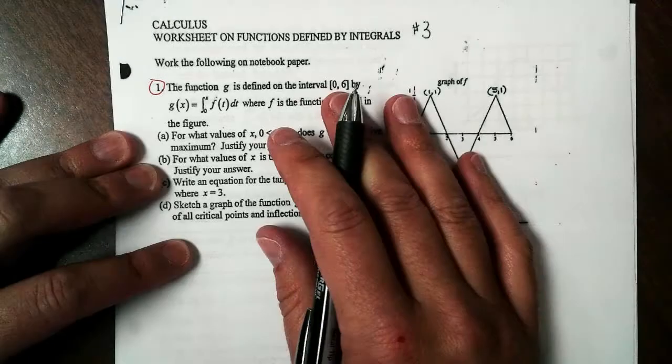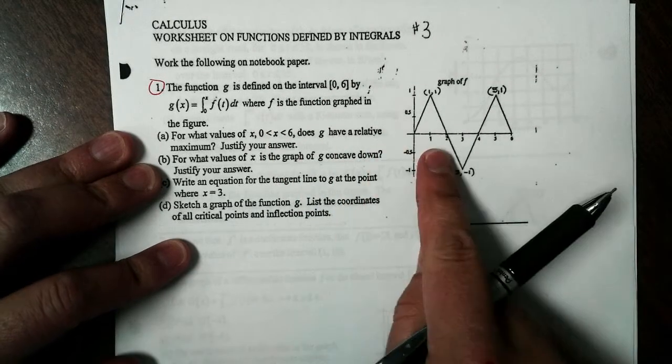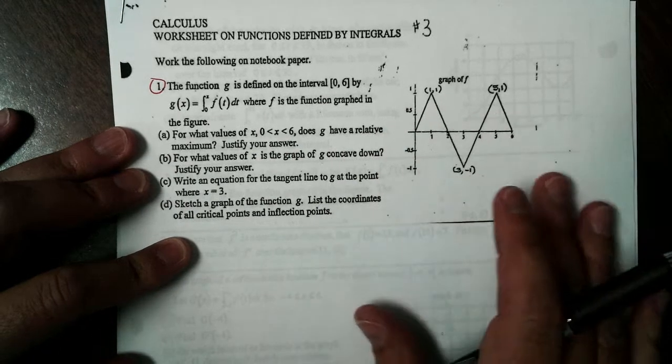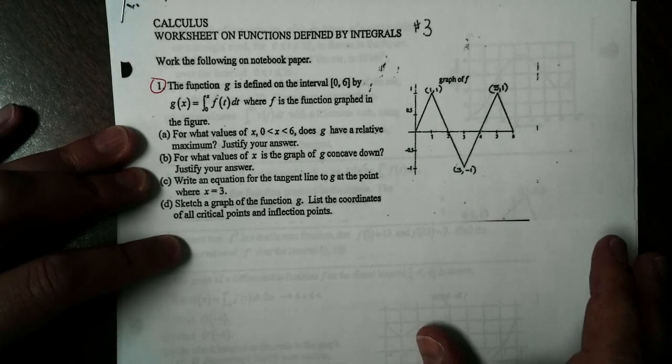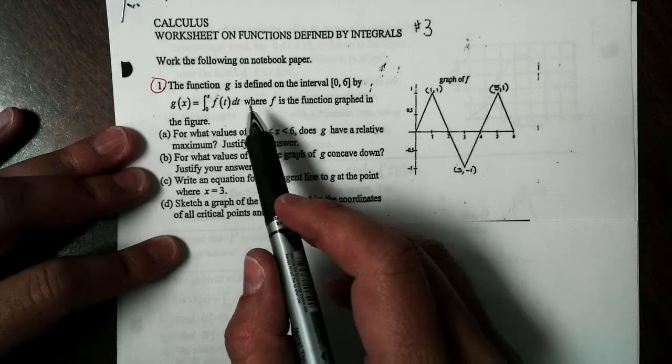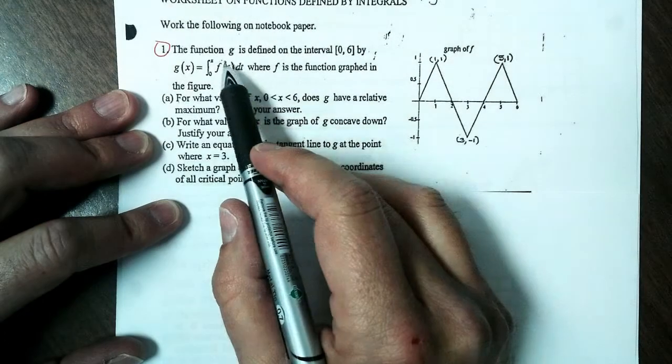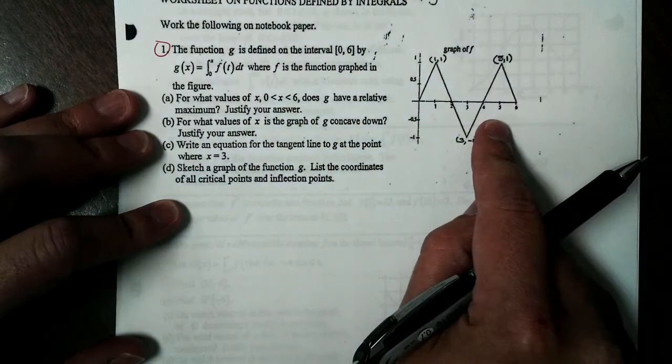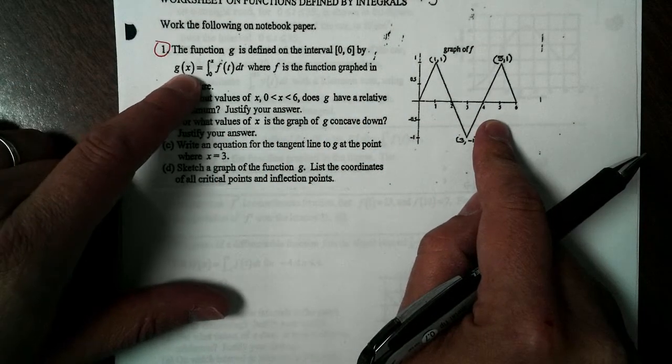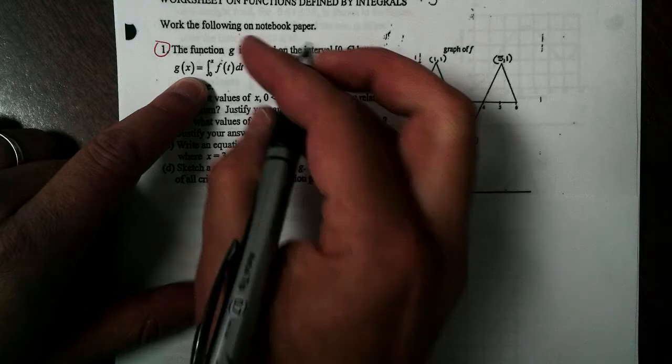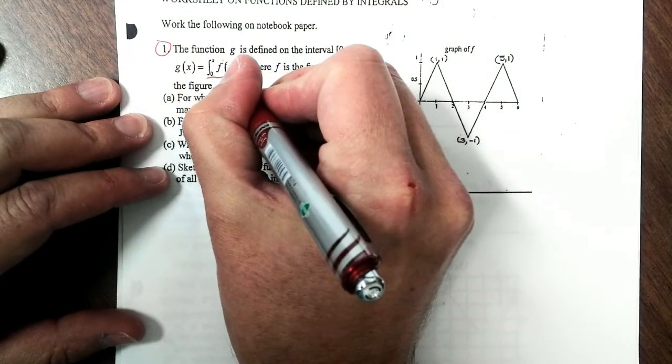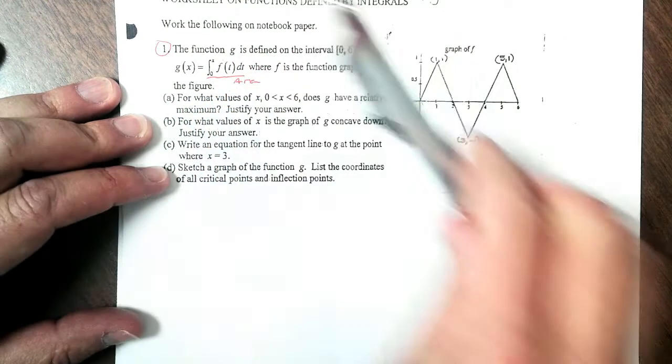So we're going to take a look at a few more examples. This is some questions that came from the AP test. Now the AP always says they're going to give you a question like this, and they're going to give you about 15 minutes for it. It shouldn't take you that long for these. So let's see here. Looking at question number one, they give us the function g is defined on the interval from 0 to 6 by this integral. So g of x is defined by this. Now we might remember that this is saying we are defining g of x as an area.